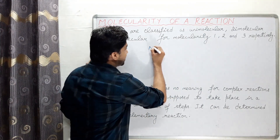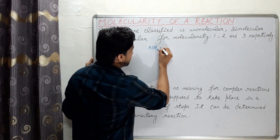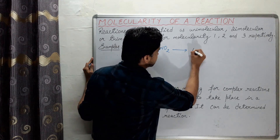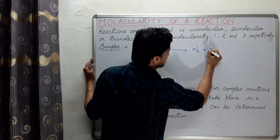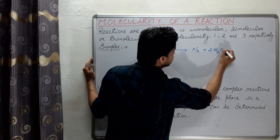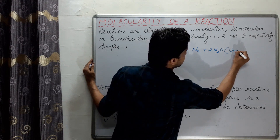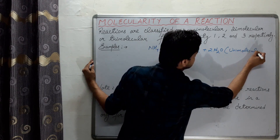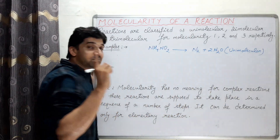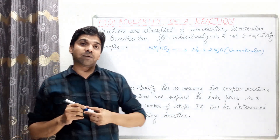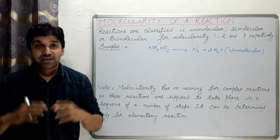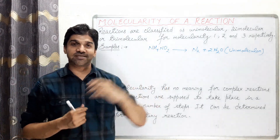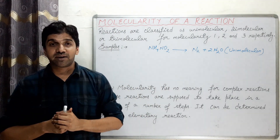Example of unimolecular reaction: ammonium nitrite decomposes to form nitrogen and water. In this case, a single molecule of ammonium nitrite decomposes to form the products. It is a unimolecular reaction.